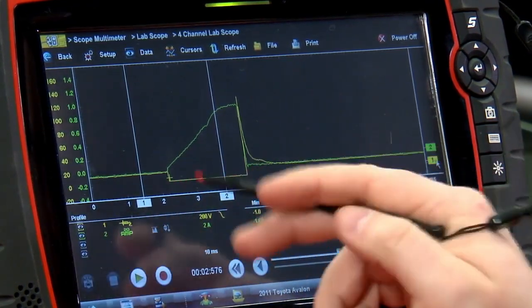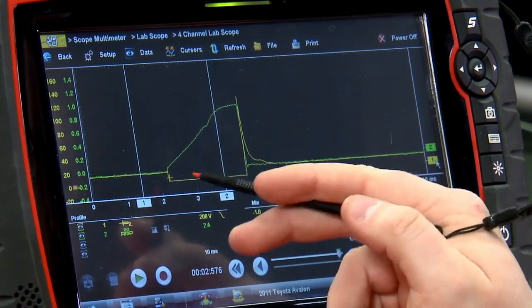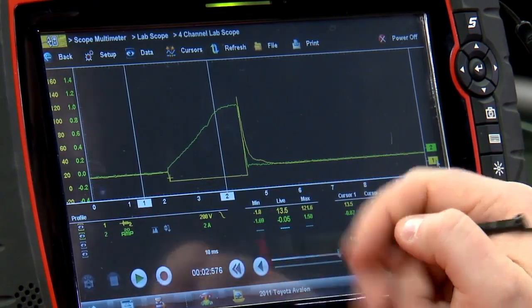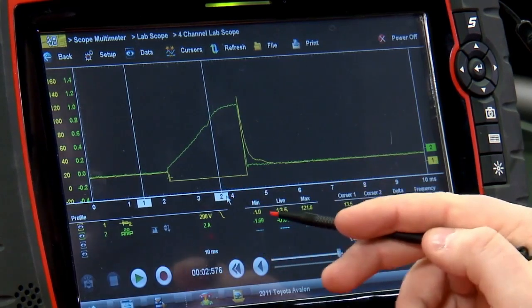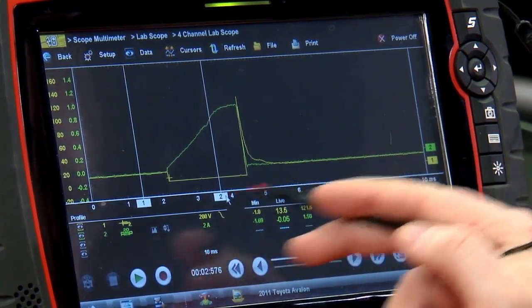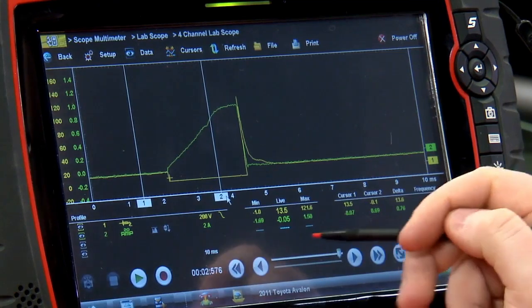Then this squared off corner right here is where the PCM takes and grounds that fuel injector to turn it on. So measurement at cursor two, roughly ground. It's going to change slightly depending on where we put it. So that's pretty close to ground.